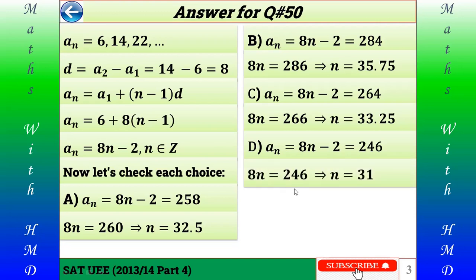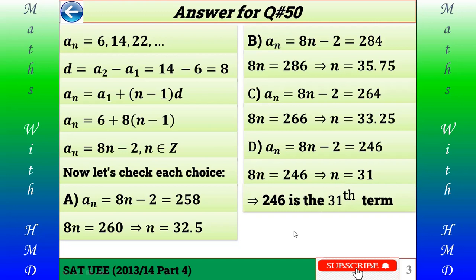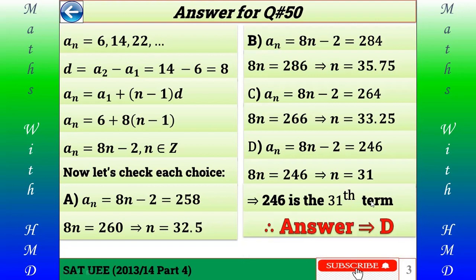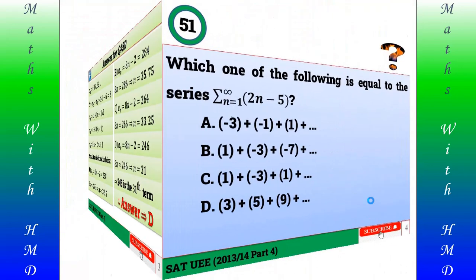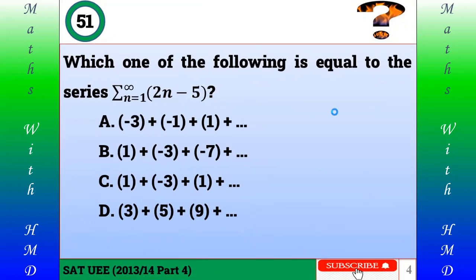So 8n equals 248, which gives n equals 31. Since 31 is an integer, 246 can be a term in this sequence — specifically the 31st term. Therefore the answer is D. I hope you got the answer. Let's continue with the next question.